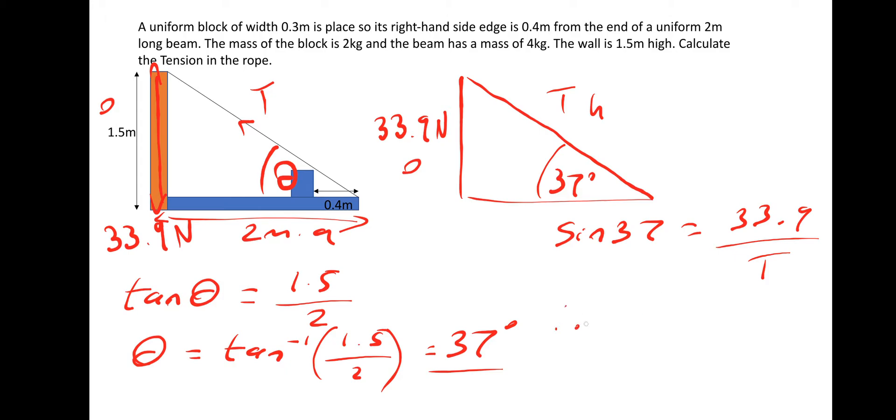Therefore the tension T is equal to 33.9 divided by sin 37. So that gives us 56 newtons. Hopefully you got that okay. Let's move on to the next one.